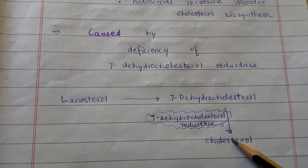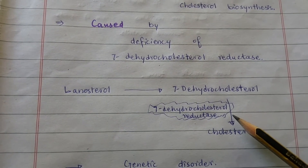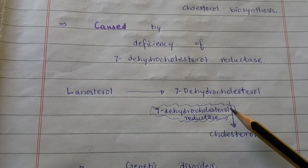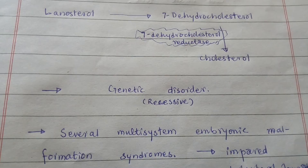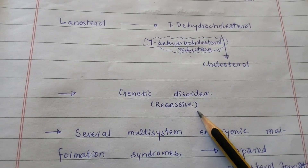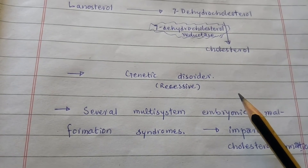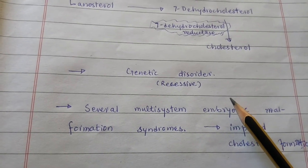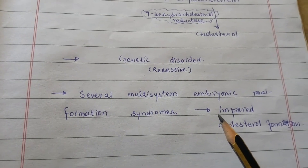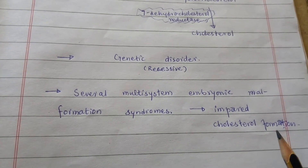The 7-dehydrocholesterol reductase enzyme reduces the double bond in 7-dehydrocholesterol, thereby converting it into cholesterol. The enzyme deficiency occurs as a result of an abnormal DHCR7 gene inherited from each parent. DHCR7 encodes 7-dehydrocholesterol reductase. It is an autosomal recessive disorder, occurring when an individual inherits the same abnormal gene from each parent. SLOS is one of several multi-system embryonic malformation syndromes associated with impaired cholesterol synthesis.